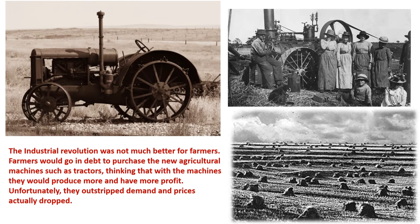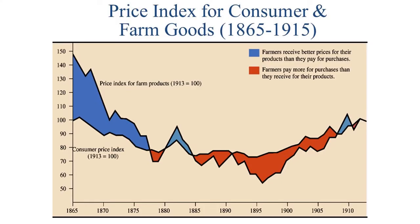The Industrial Revolution wasn't much better for farmers than it was for factory workers in the cities. Farmers would go into debt to purchase the new agricultural machines — things like tractors — produced by the Industrial Revolution. With these inventions they would produce more, but unfortunately they outstripped demand, producing so much that the prices they got for their crops actually dropped. A chart shows prices and losses for the agricultural industry — the blue represents profit, but as the years go on in the late 19th century, you see all that red debt that farmers were incurring even as they produced more and more.